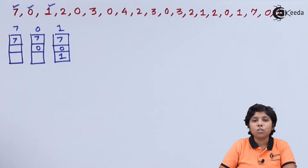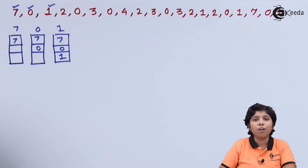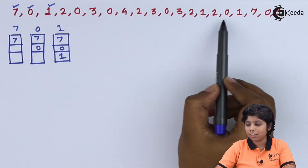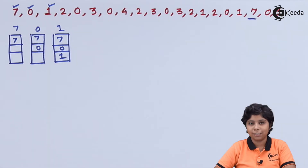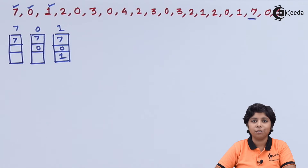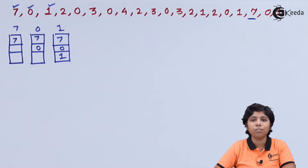Now as page 2 is appearing in the system, we need to count among 7, 0, and 1 — which are present in the frames — which one will not be used for the most amount of time. Page 2 is causing a page fault. We count until when 7, 0, and 1 will each be used. As we can see from the reference string, 7 appears much later than 0 and 1, so 7 will be replaced with 2.